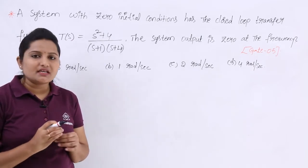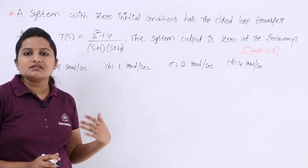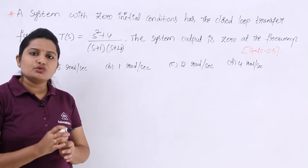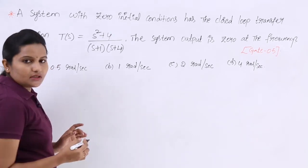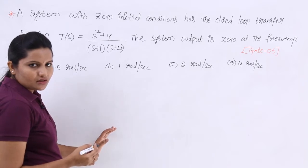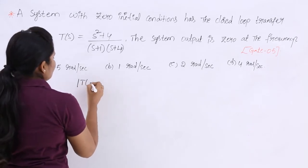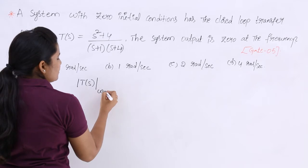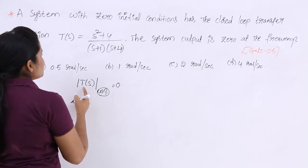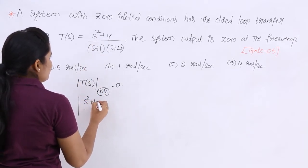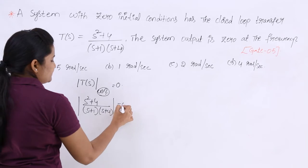This is a very simple problem when you know what we need to take as system output. The magnitude of the transfer function can be taken as the system output. For a control system, when the magnitude at some frequency is equal to zero, the system output is zero. So we set the modulus of T(s) at unknown omega equal to zero, and we need to find this omega.